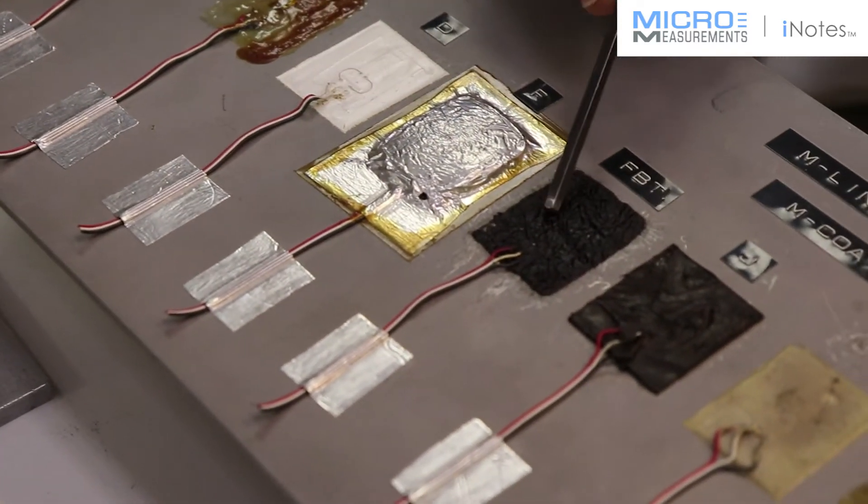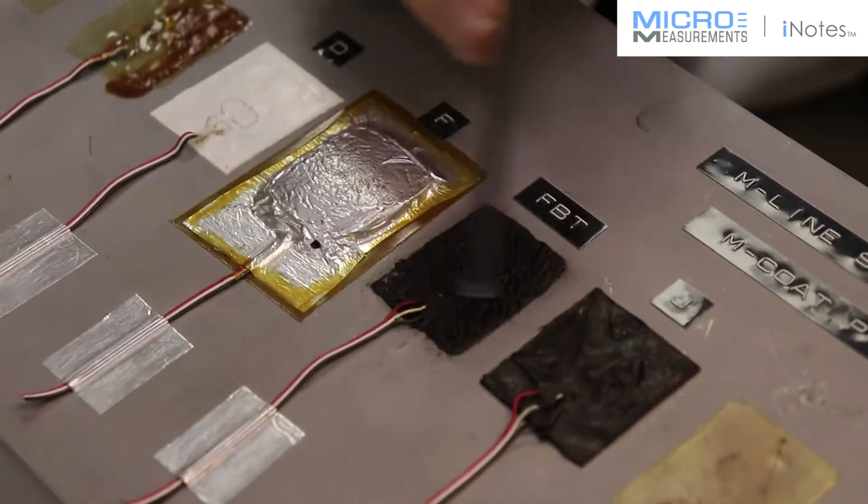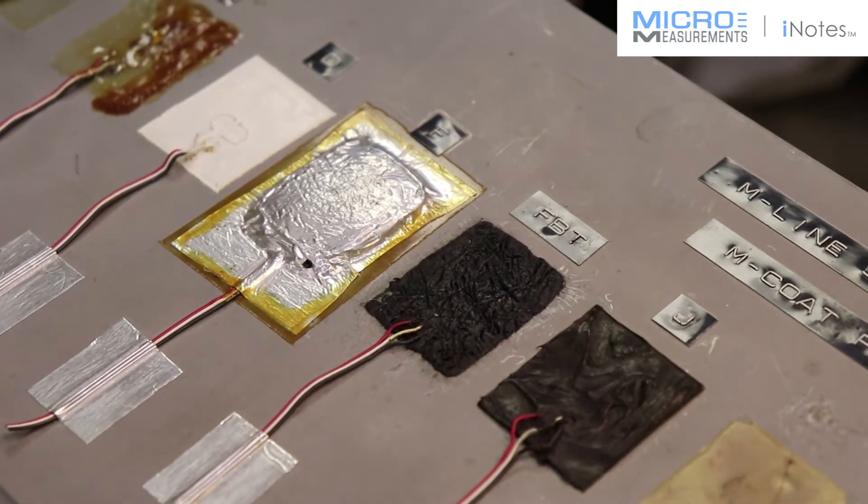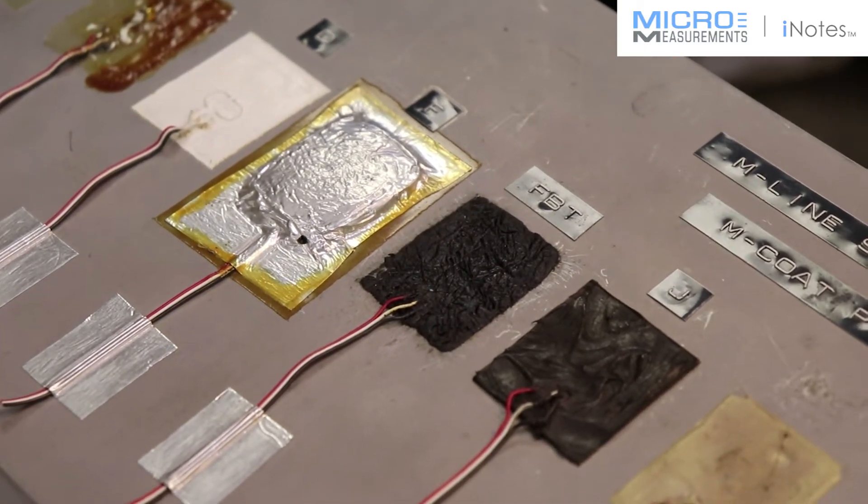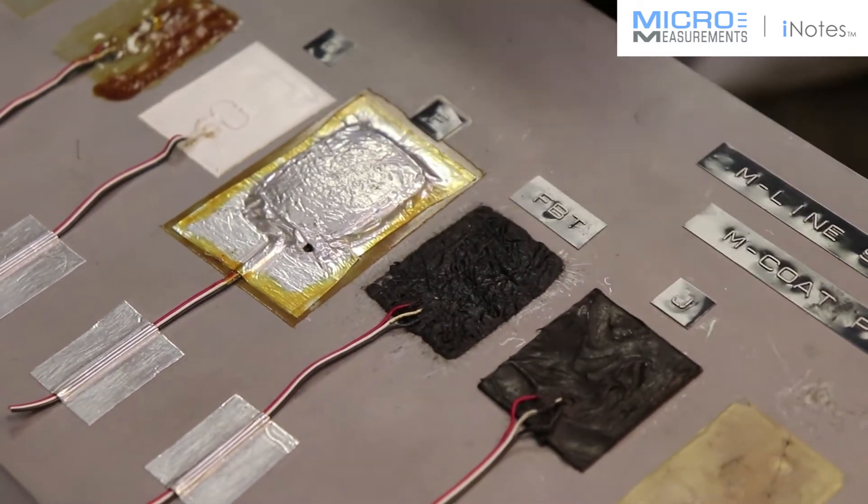The one next to it is FBT. Now this material, if you can hear, it's still sticky. This material is the thinned butyl rubber. It comes in the consistency of toothpaste in a tube. And you take a spatula and you smear it out.